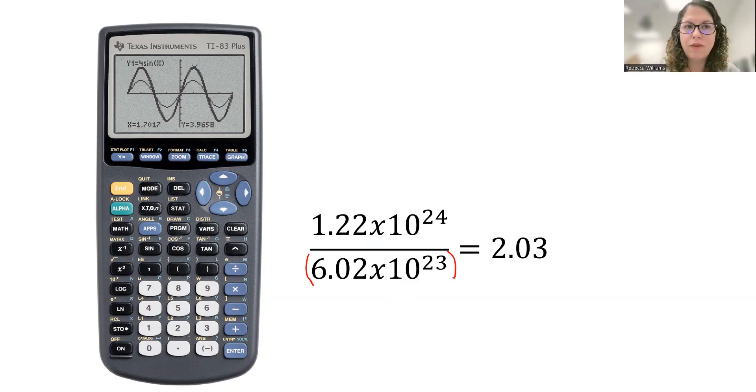You have the button on the first calculator I've got. This is a graphing calculator, very much like the one that I have here. And it has this EE function right there. Notice that the EE function is behind the comma. So to get to it, you actually have to hit second comma.